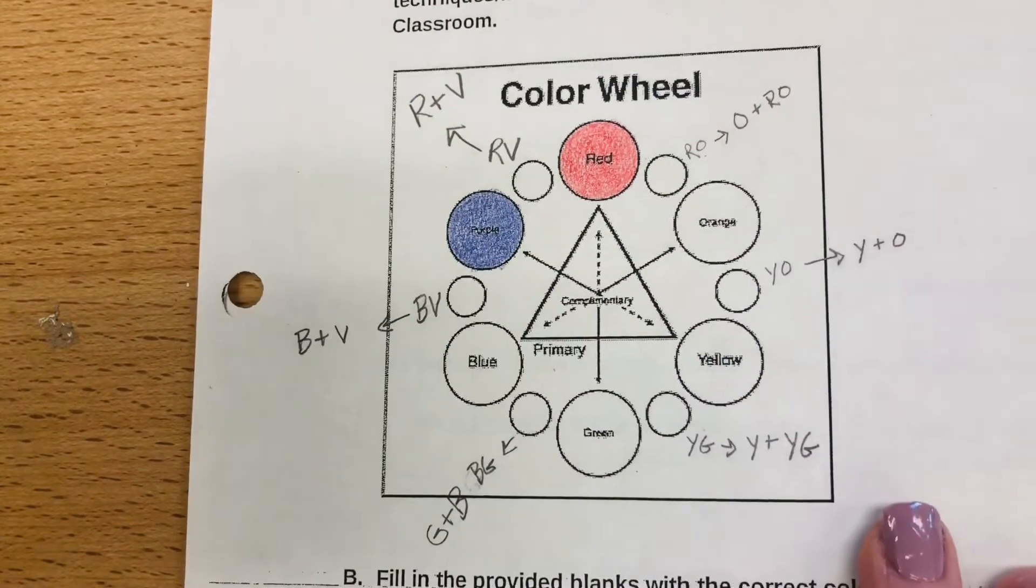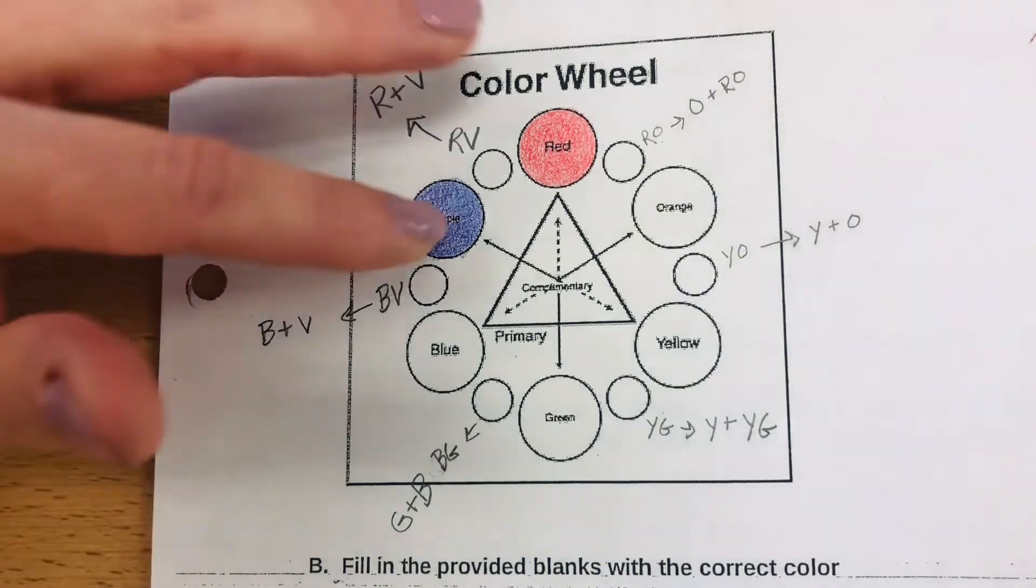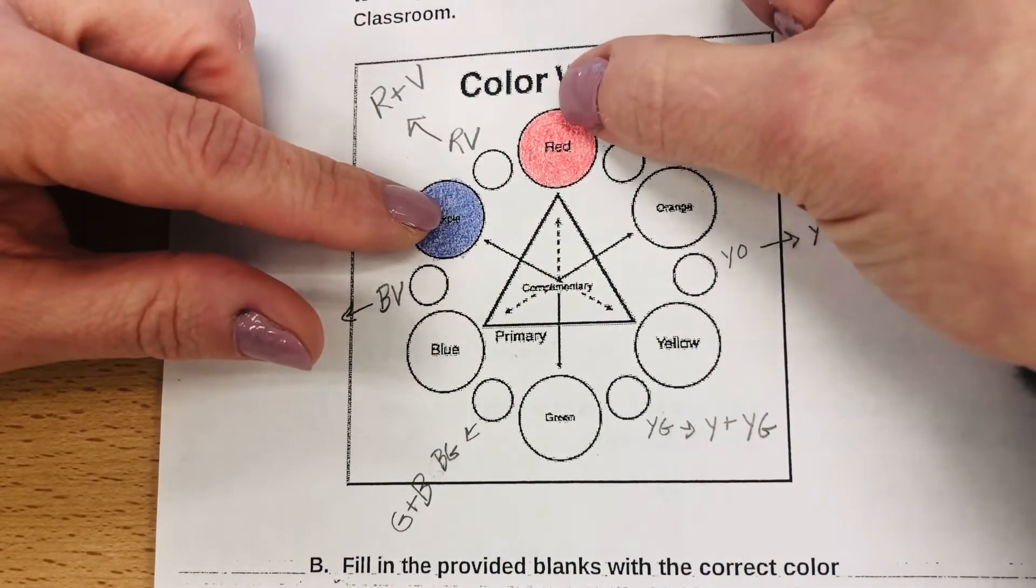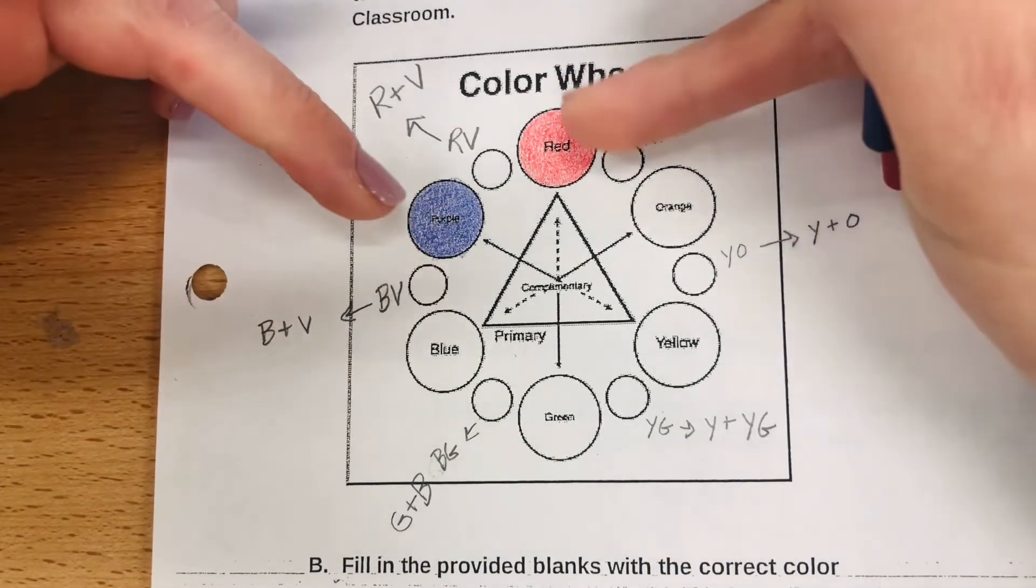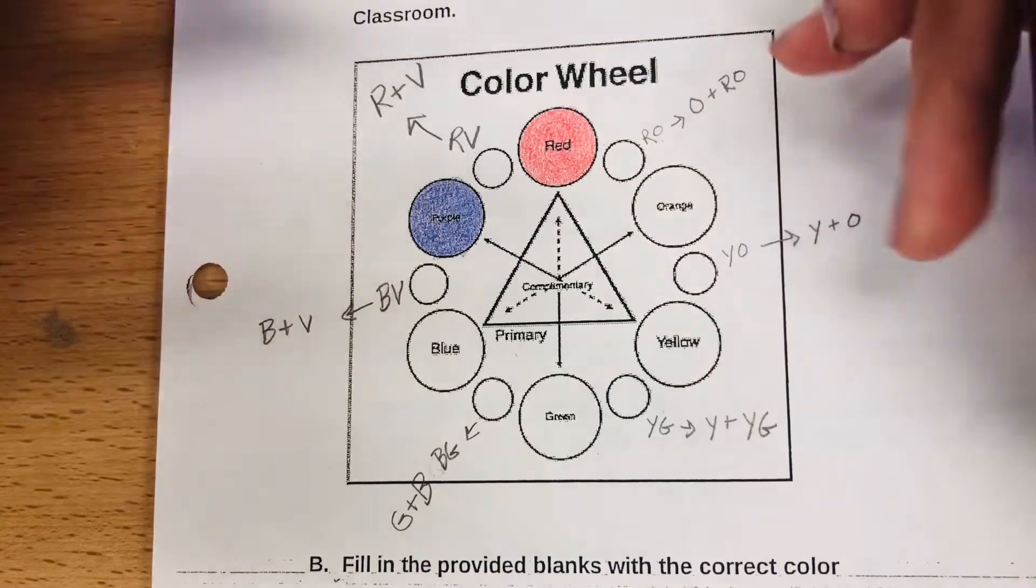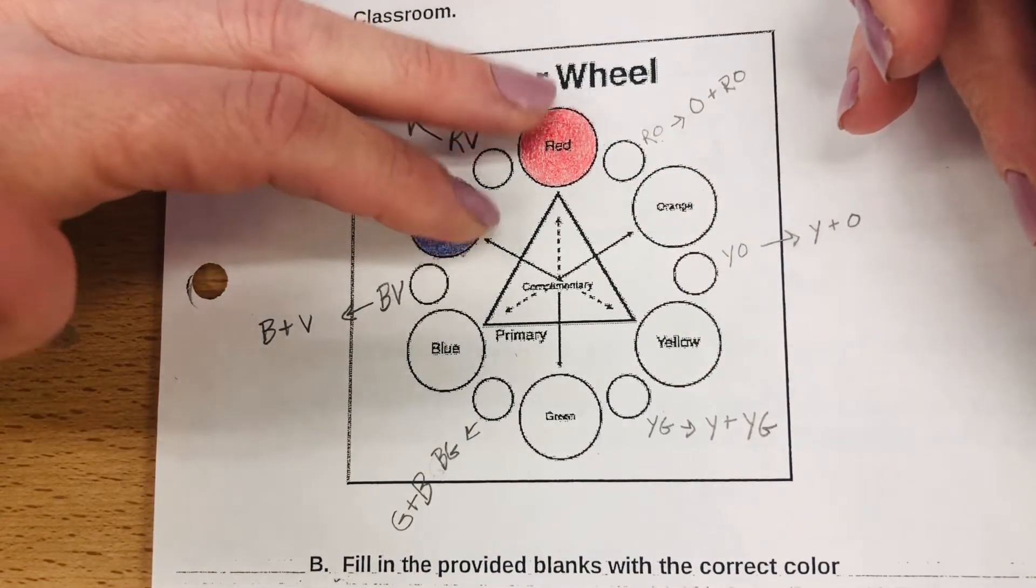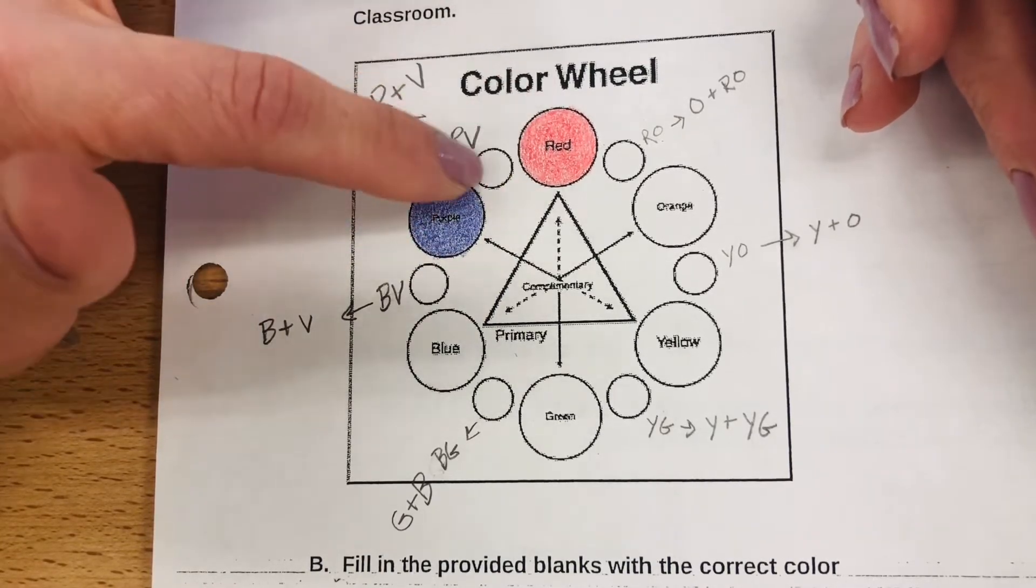So once you get those labeled, I'm going to start you guys off on value shading the red-violet. The purpose of this is after you have your primaries and your secondary colors filled in in these little sections, you're going to try to match just your base color with what you already have here.